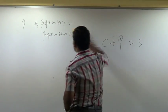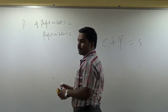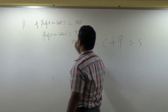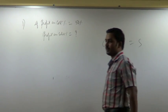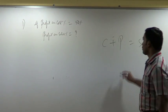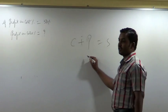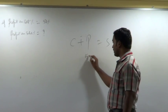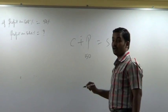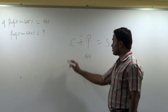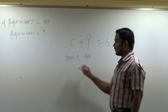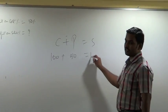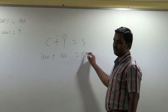Profit on cost percentage was 50% — I want profit on sales percentage. Profit is 50% on what? On cost. So when cost is 100, profit is 50. Sales is how much? 150.